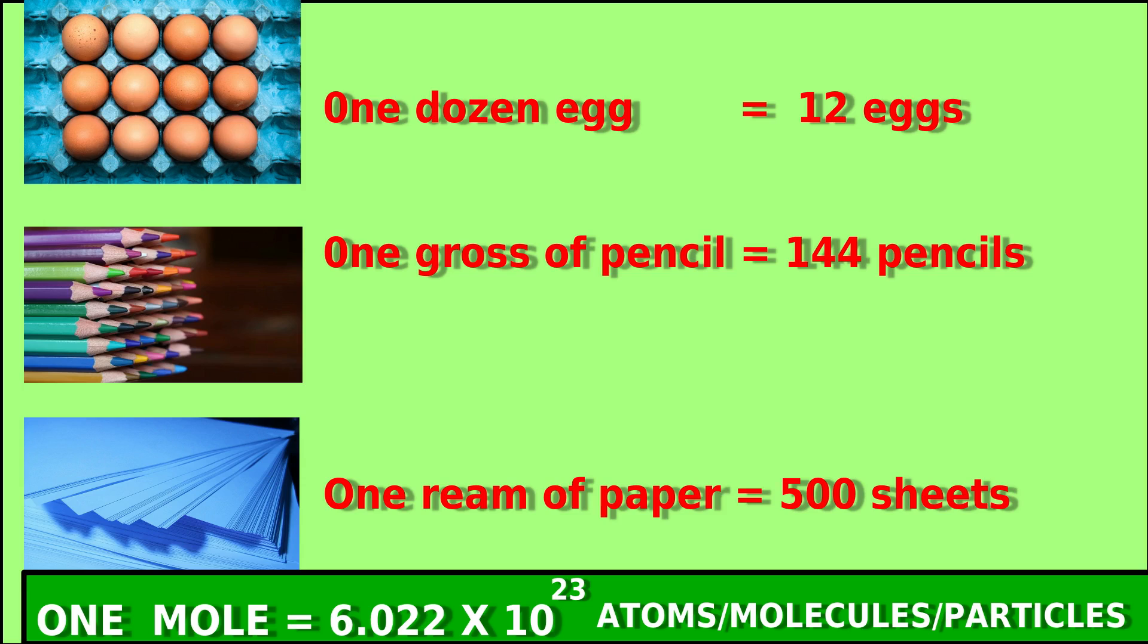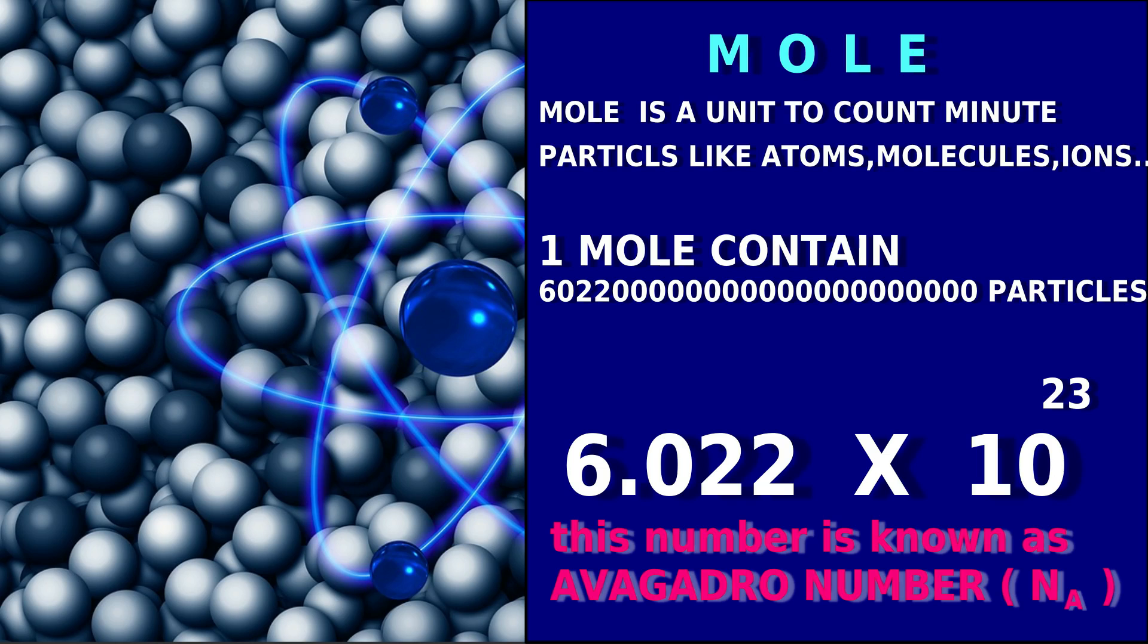In the same way, in chemistry we use the term mole to count minute particles like atoms, molecules, anions, etc. One mole contains 6.022 × 10^23 number of atoms, and this number is termed as Avogadro number.